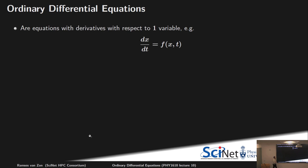An ordinary differential equation is 'ordinary' because you only take the derivative with respect to one variable — typically time. The equation tells us what the time derivative of some variable x is, given the value of x and whatever time we're at. While t is just one scalar, x could in principle be a vector with several components, covered by the same general form.